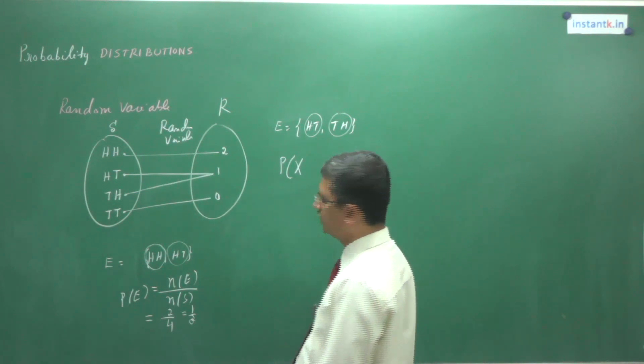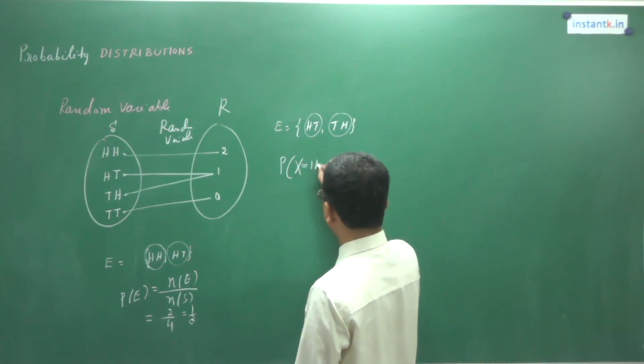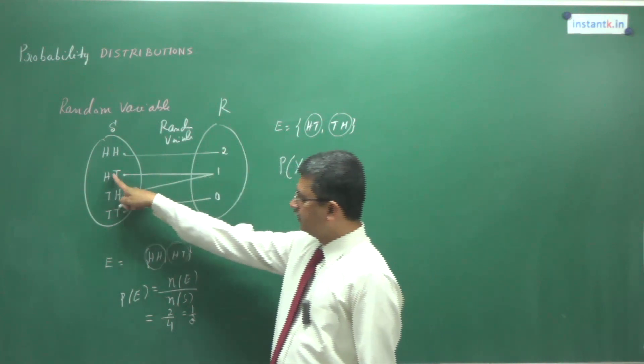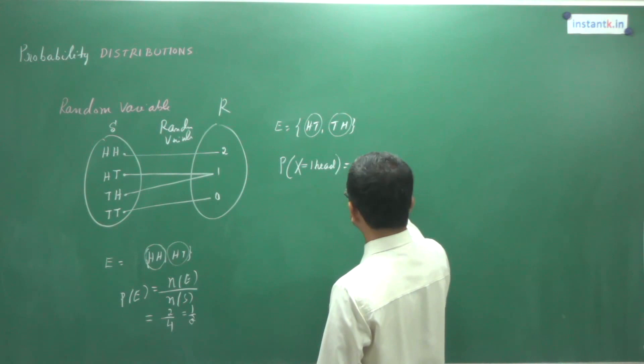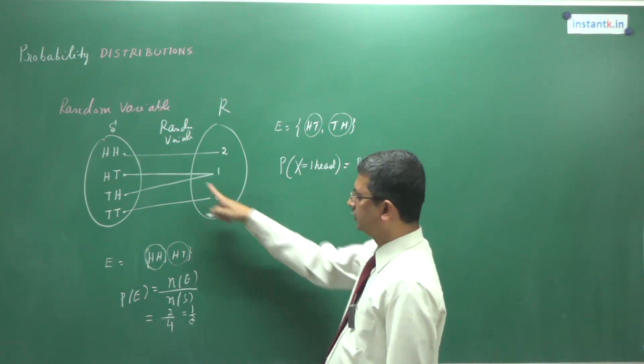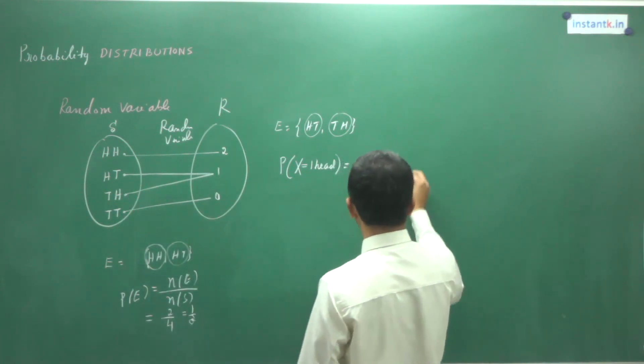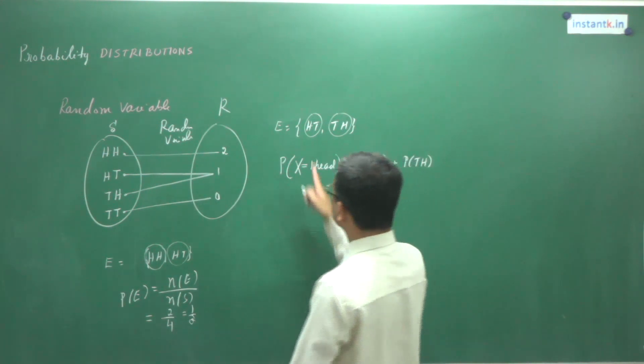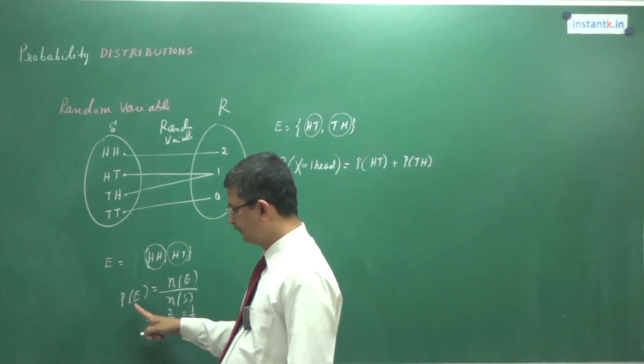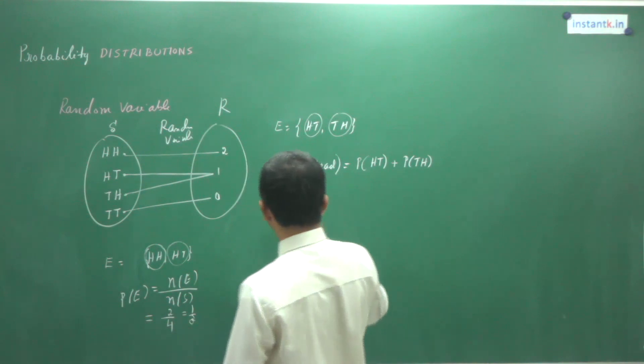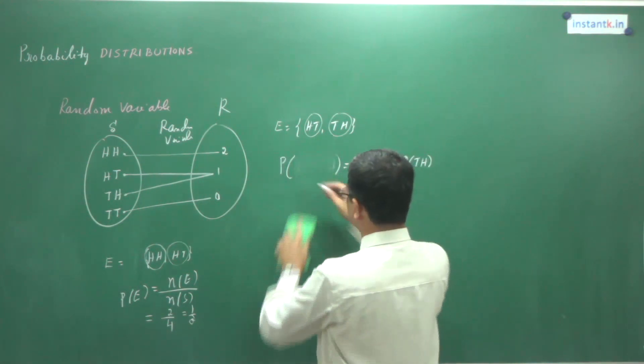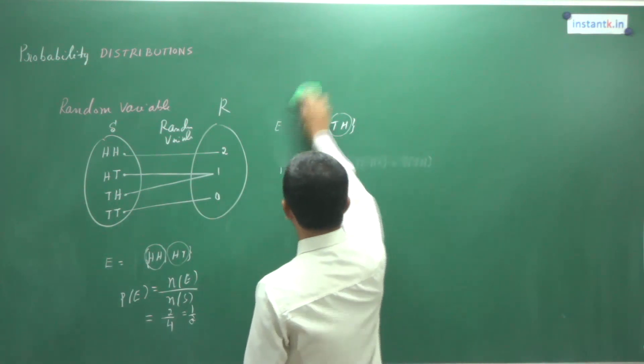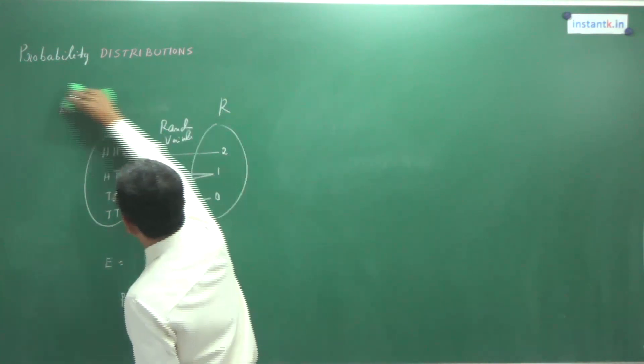What is X? X is nothing but 1 head, equal to... What is that? Probability of getting HT—one possibility. Other possibility is TH, or probability of TH. This way we will now associate probability not for the events, but for the random variables. So probability of 1 in terms of probability of the corresponding events. This type of definition you make for random variables.